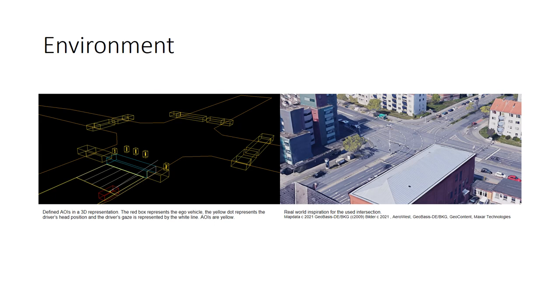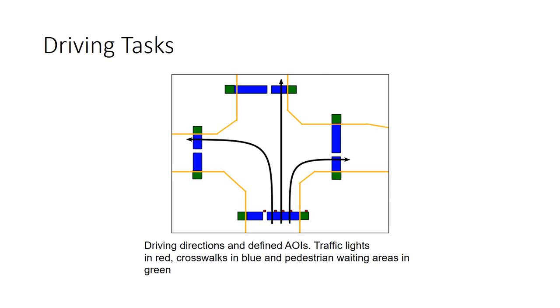In order to achieve a realistic environment, the intersection used for our scenarios is modeled after a real-world intersection. We chose to use a complex urban intersection, as it is the environment with the highest potential for human error. The participants had to perform three driving tasks: turning left over the intersection, driving straight over the intersection, and turning right over the intersection.